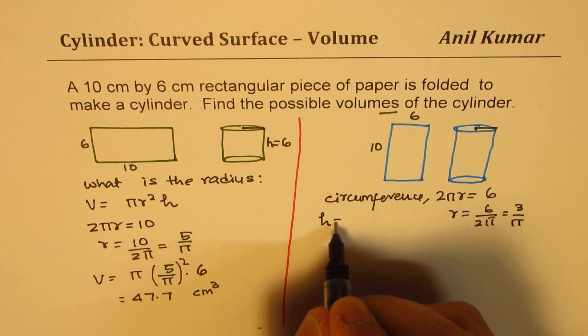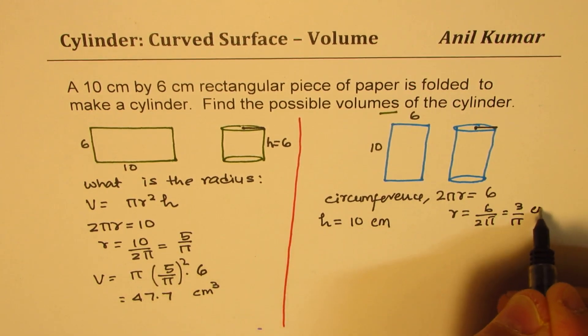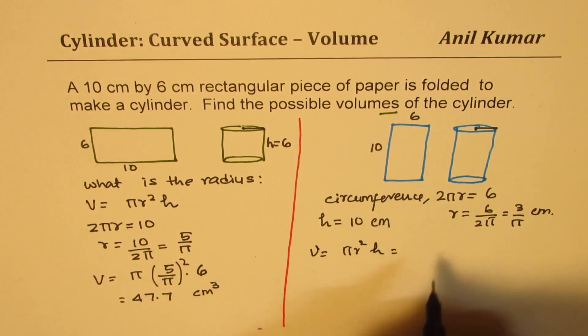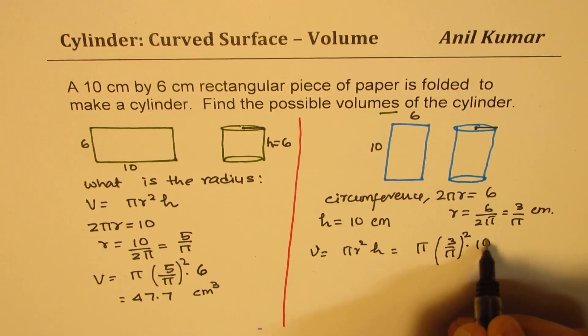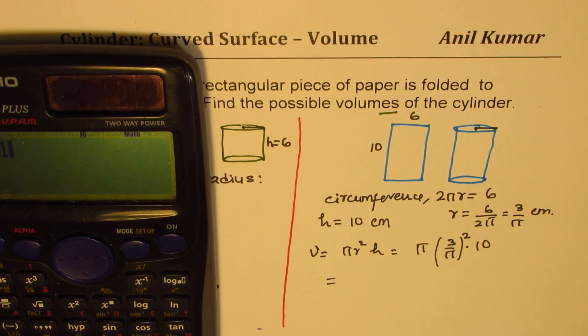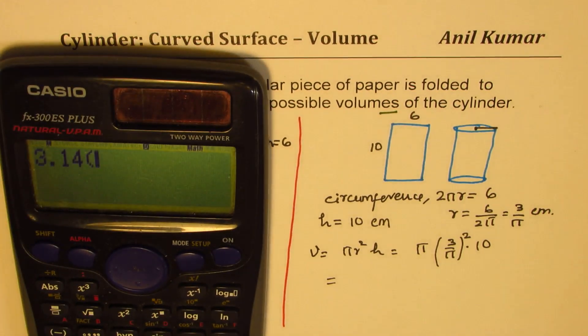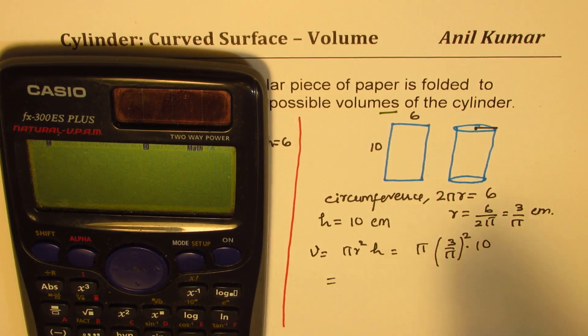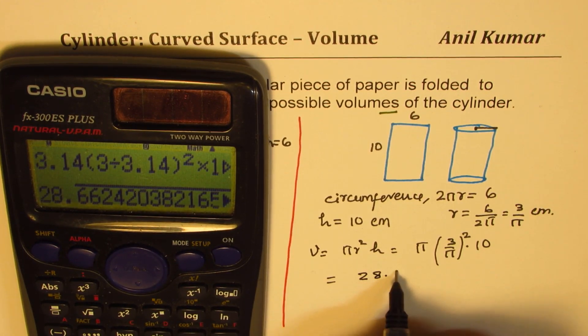Now, in this case, height is equal to 10 centimeters. So the volume is pi r squared times height, which is pi times radius of 3 over pi, whole square times height of 10. So that is what we are going to get. So let's figure out what is this. So we have 3.14 within brackets. We have 3 divided by 3.14 whole square, and then we are going to multiply this by 10. So we get, in decimals, the value as 28.6.